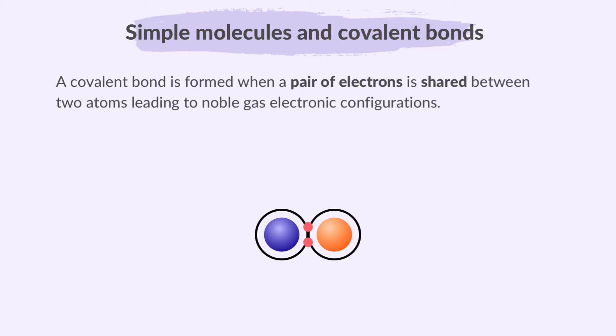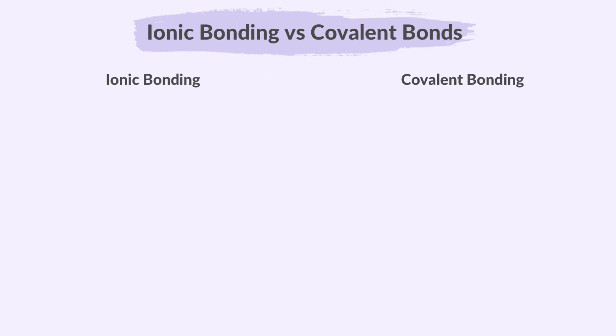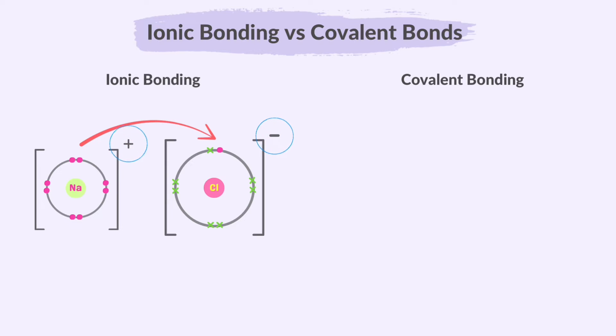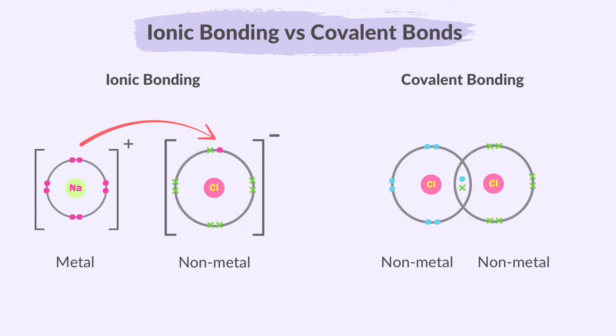A covalent bond is formed when a pair of electrons is shared between two atoms, leading to noble gas electronic configurations. Covalent bonds are formed between two or more non-metals. We previously learned about ionic bonding and this is not the same as covalent bonding because ionic bonding involves the transfer of electrons and the formation of ions while covalent bonding involves the sharing of electrons to create molecules. Ionic compounds tend to be composed of metals and non-metals while covalent compounds are typically formed between non-metal elements.